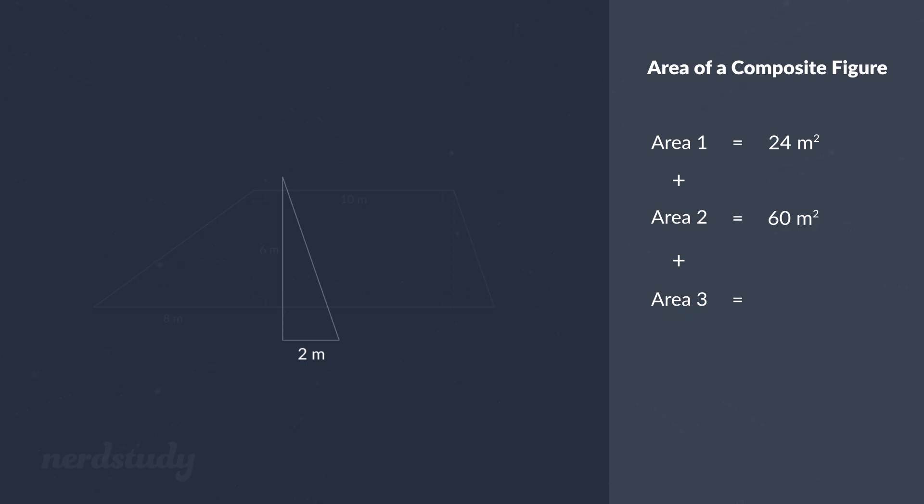But since this triangle's height is made up of the rectangle we see here and we know that the opposite sides of a rectangle are always the same in length, we know for a fact that this line here is in fact 6 meters.